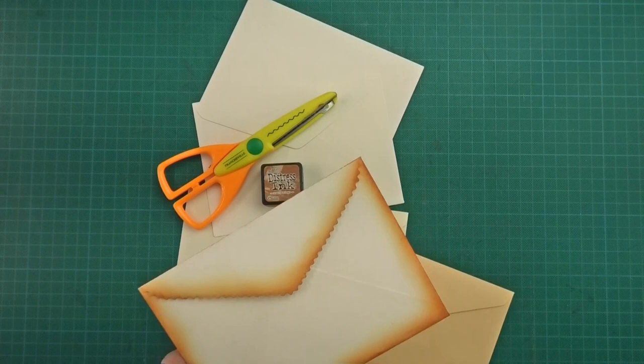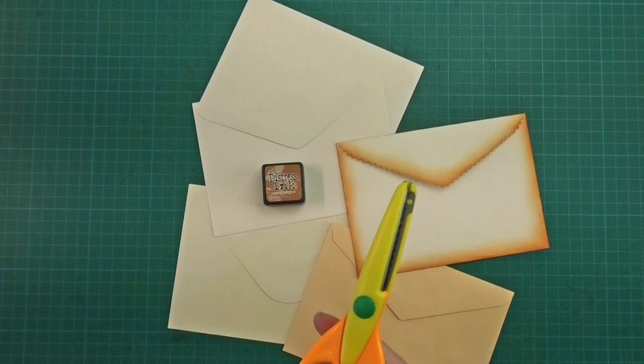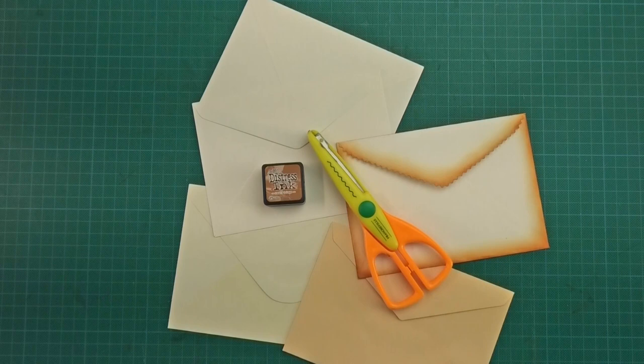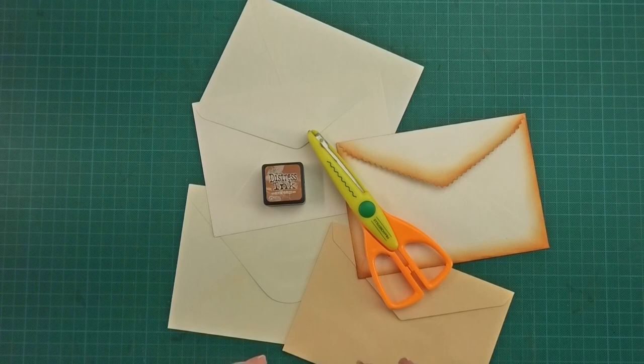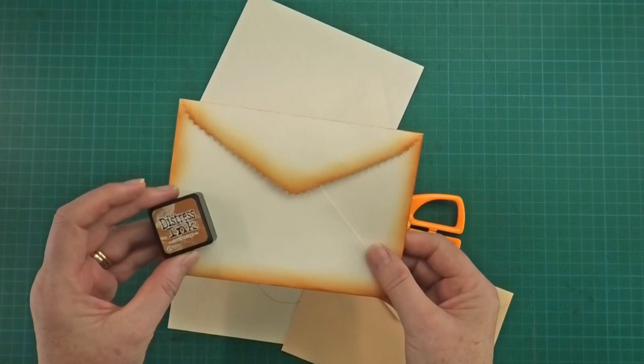So I've just got a pair of fancy scissors with a scalloped edge to go in with the theme of the scalloped altered envelope edge. I've also got some rusty hinge just to change up the edge of the envelope, just to give it something totally different.